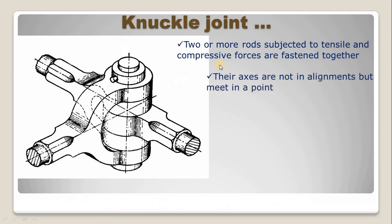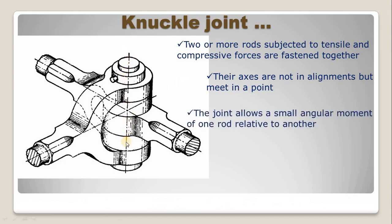The second point is that the axes of the rods are not in alignment but meet at one point. The axis of the fork, the single eye, and the other single eye are not aligned but meet at one point, so that we can easily insert a knuckle pin through it. The joint allows a small angular movement of one rod relative to another. Unlike a cotter joint where angular movement is not allowed, in this type of joint we allow small angular movement.